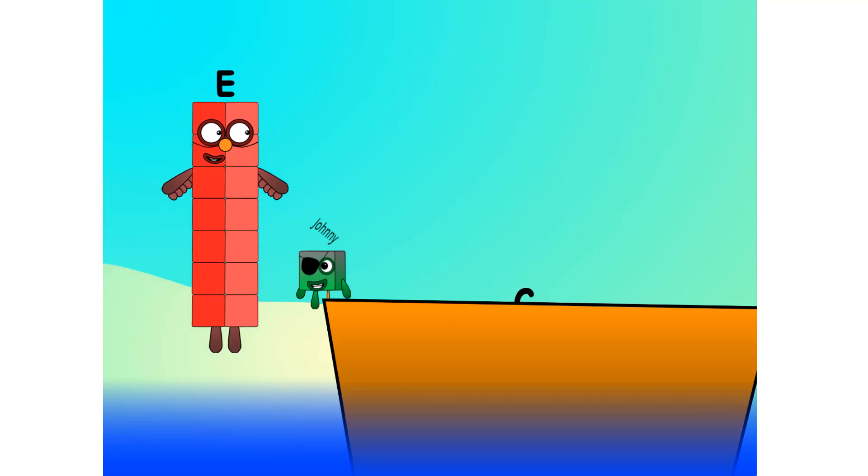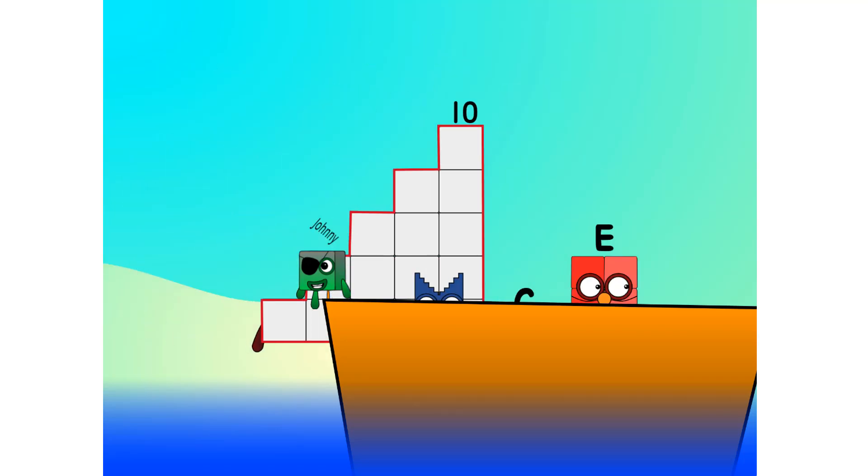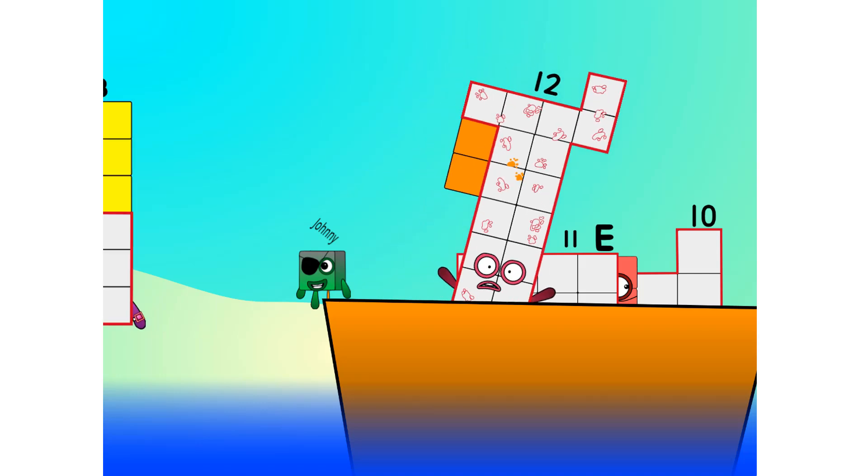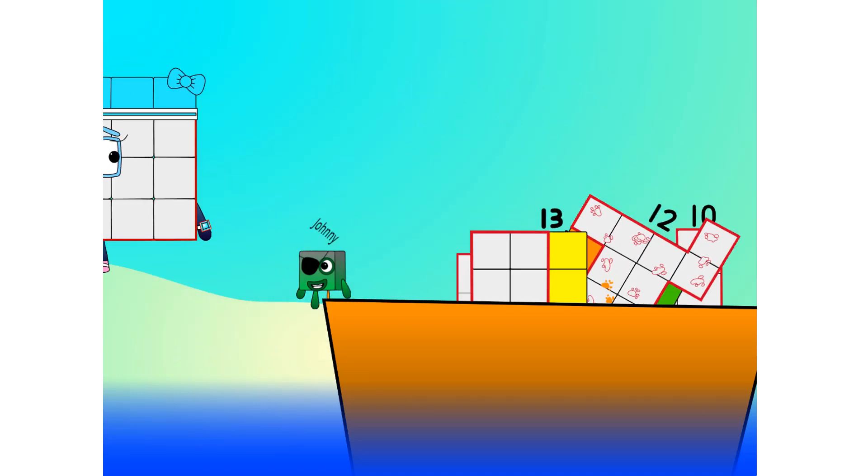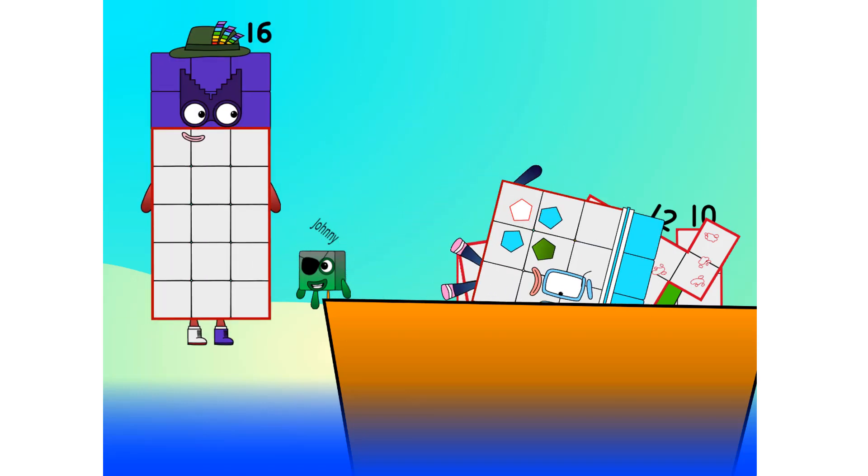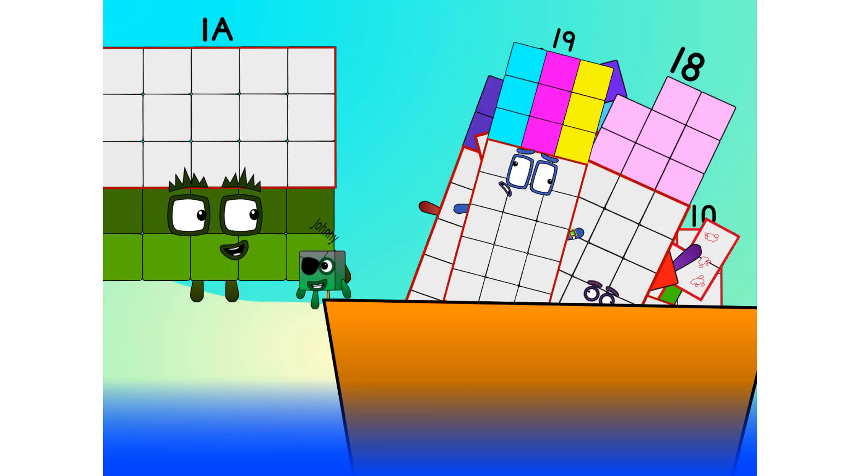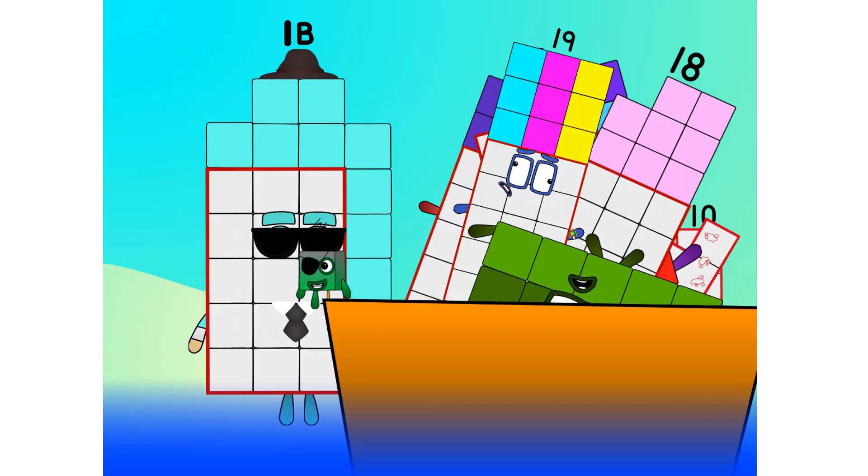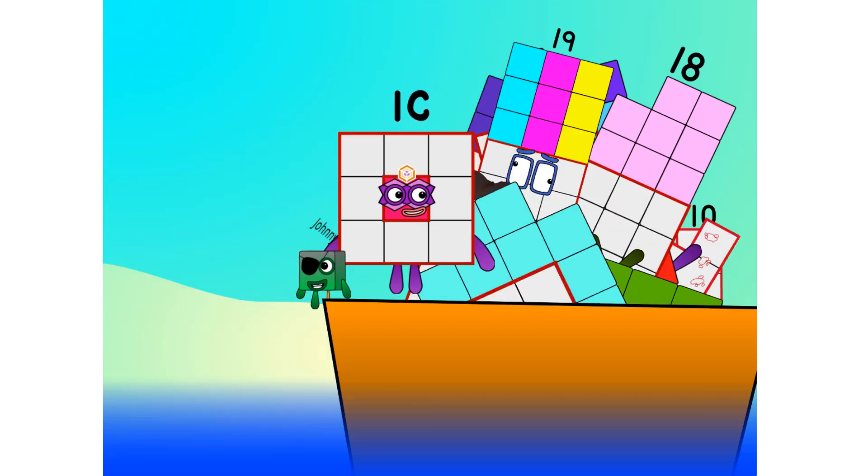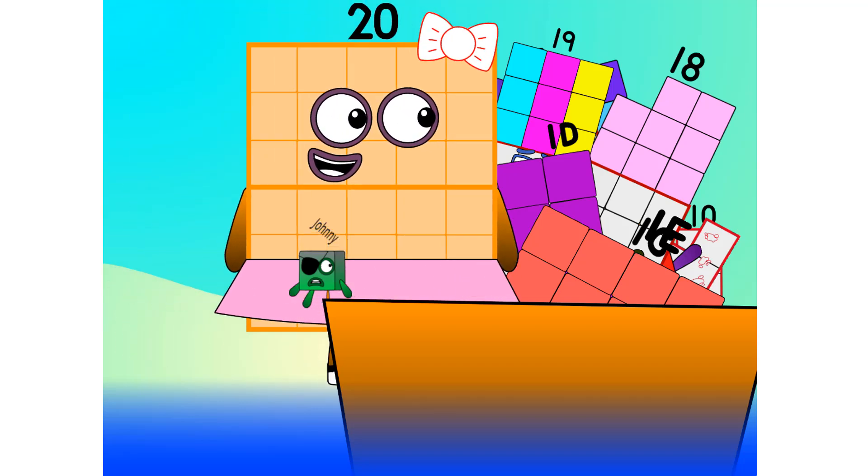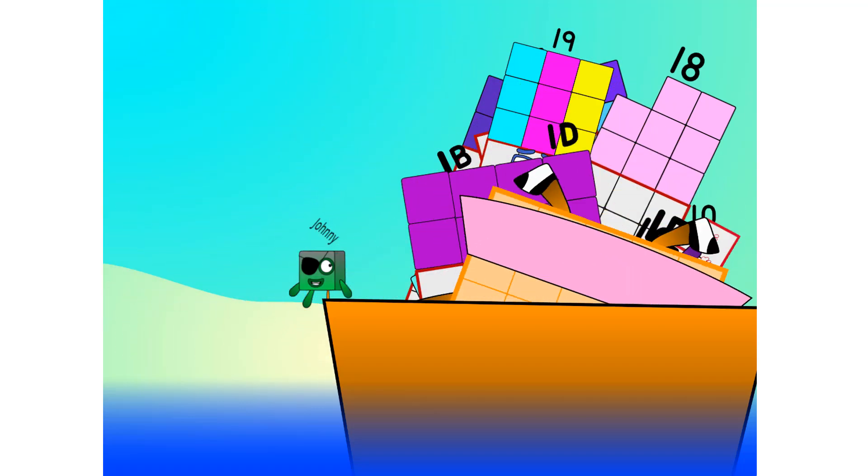Let's go me hearties, into the boat. Step lively. 5, 5, move along. 5, 1, 5, 2, 5, 3, 5, 4, 5, 5, 5, 6, 5, 7, 5, 8, 5, 9, 5. Step lively. 5, 5. Twenty! Blow me down, twenty! That's it mates, twenty is all I've got room for. Let's weigh anchor and cast off.